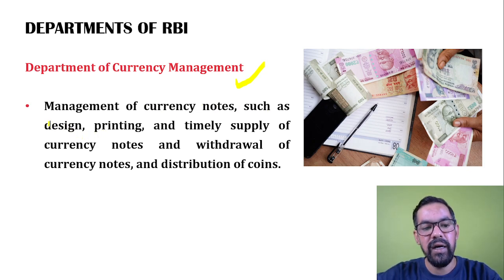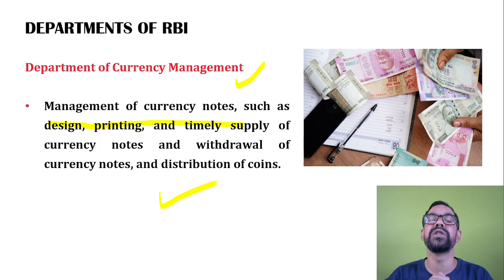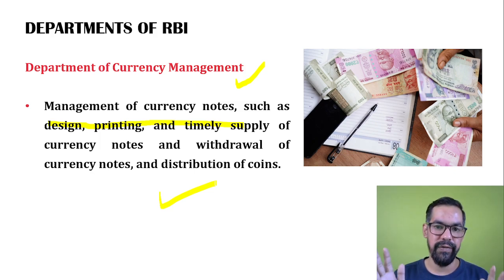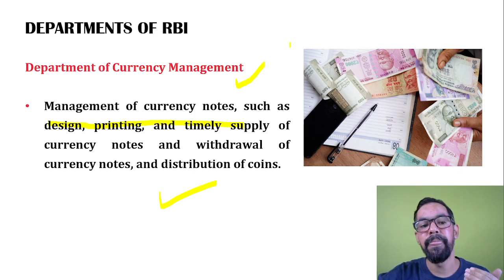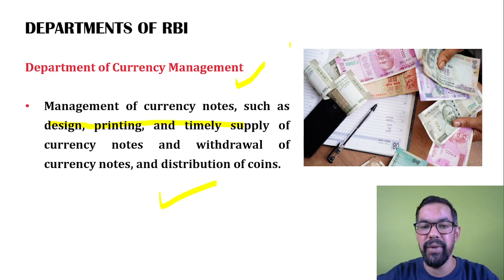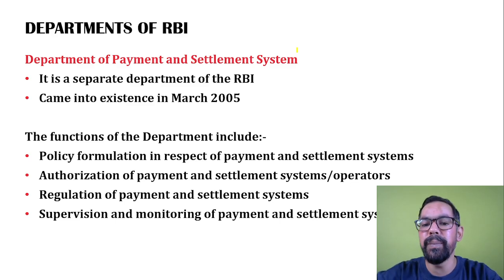The Department of Currency Management handles currency note design, printing, timely supply, withdrawal, and distribution of coins. Coins are designed and manufactured by the Government of India at four minting places, but everything related to notes — design, printing, supply management — is done by RBI's Department of Currency Management. RBI manages currency circulation through currency chests across India.